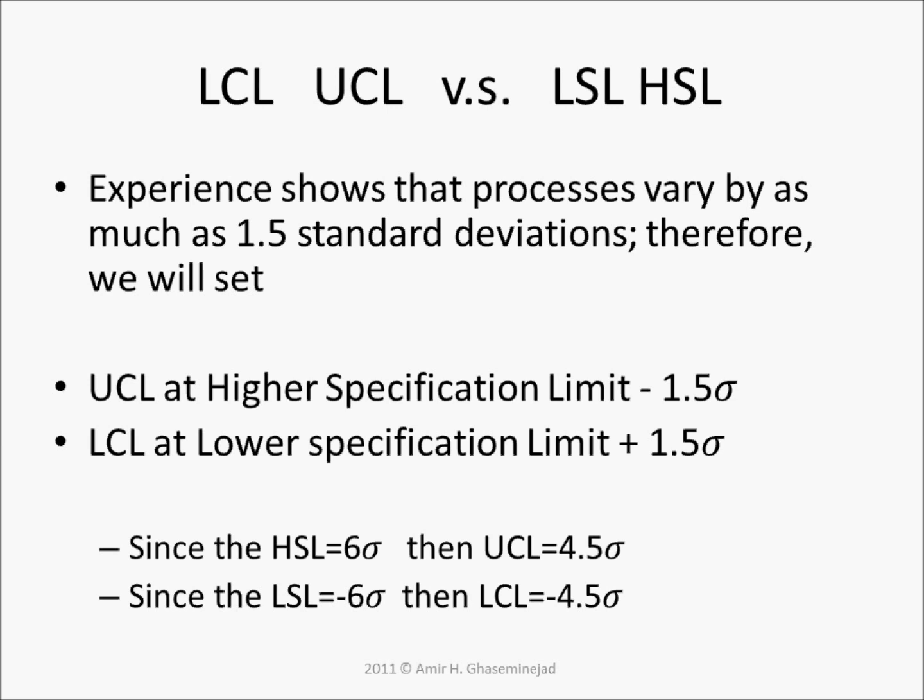Experience shows that processes vary by as much as 1.5 standard deviations. Therefore, we will set our upper control limit at 1.5 standard deviations less than the higher specification limit, and we will set the lower control limit at 1.5 standard deviations above the lower specification limit.